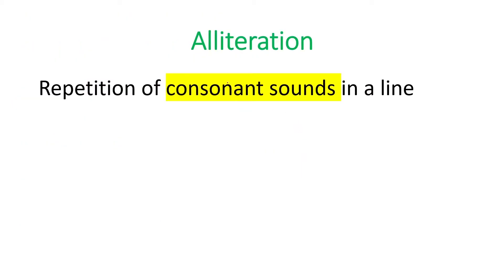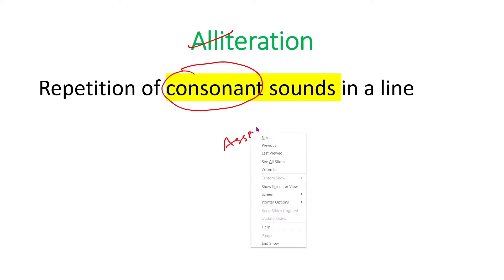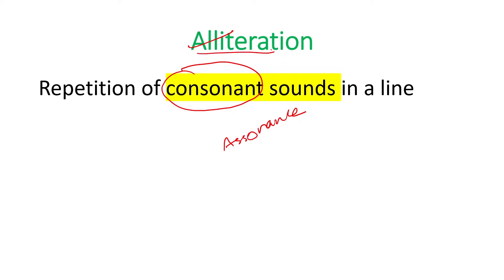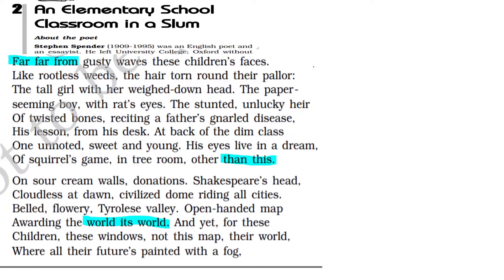Let us move on to the next poetic device: alliteration. Alliteration is the repetition of consonant sounds — not the vowel sound. If a vowel sound is repeated, that is assonance. But here it is consonant sound repetition in the same line, which is alliteration. Look at 'far far from' — the repetition of the 'f' sound.